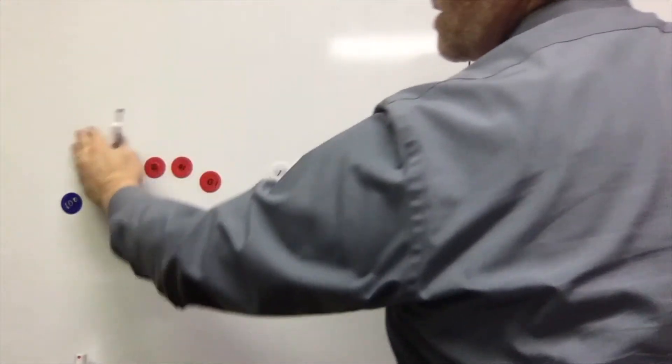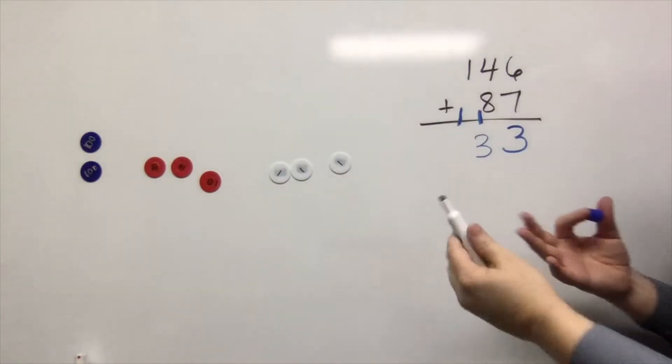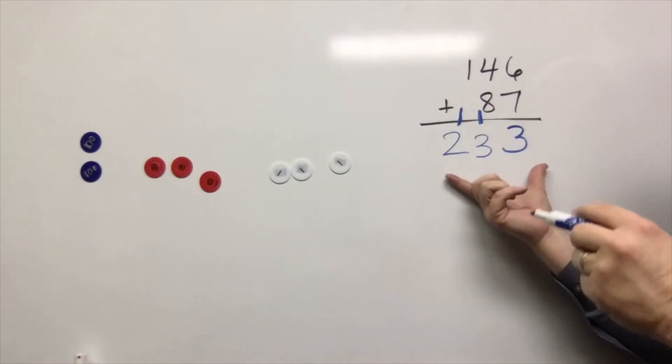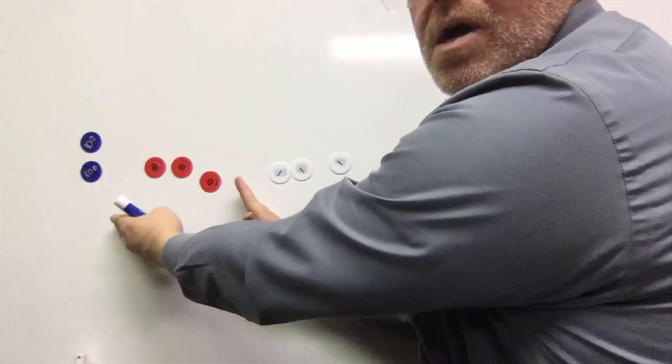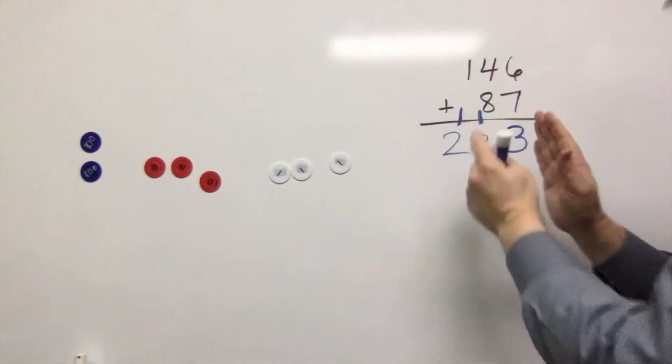And so now when we add our hundreds together, we only have 200. So there's our answer 233. So you can see the parallelism as we move from the concrete to the abstract, concrete, abstract.